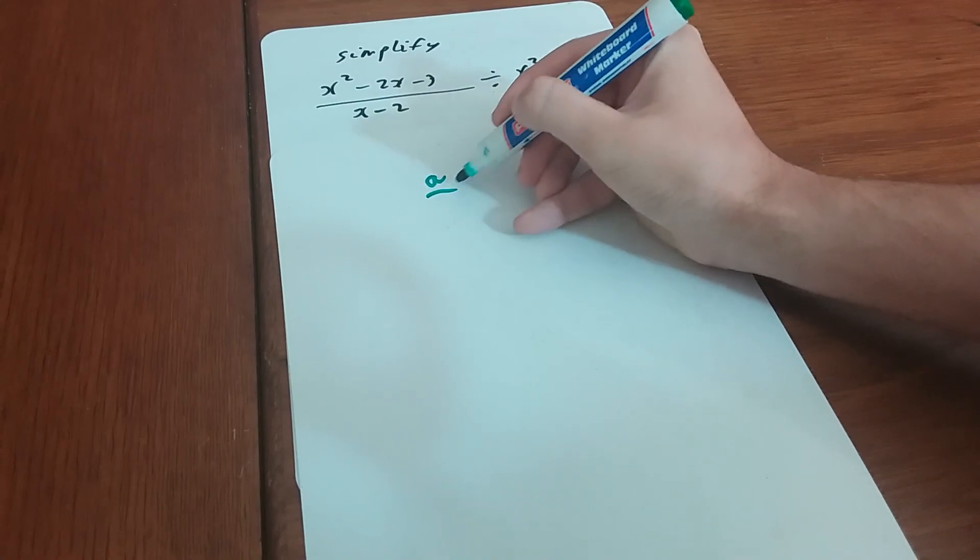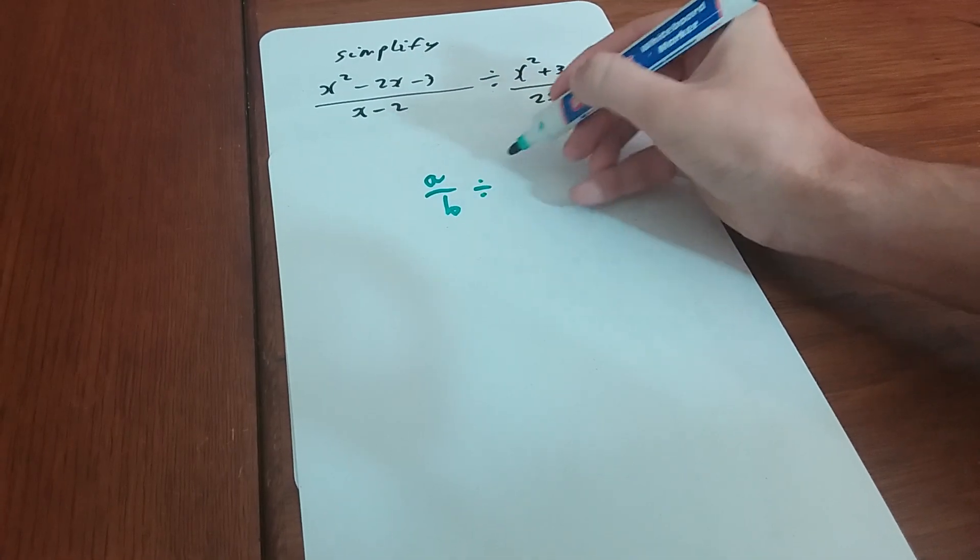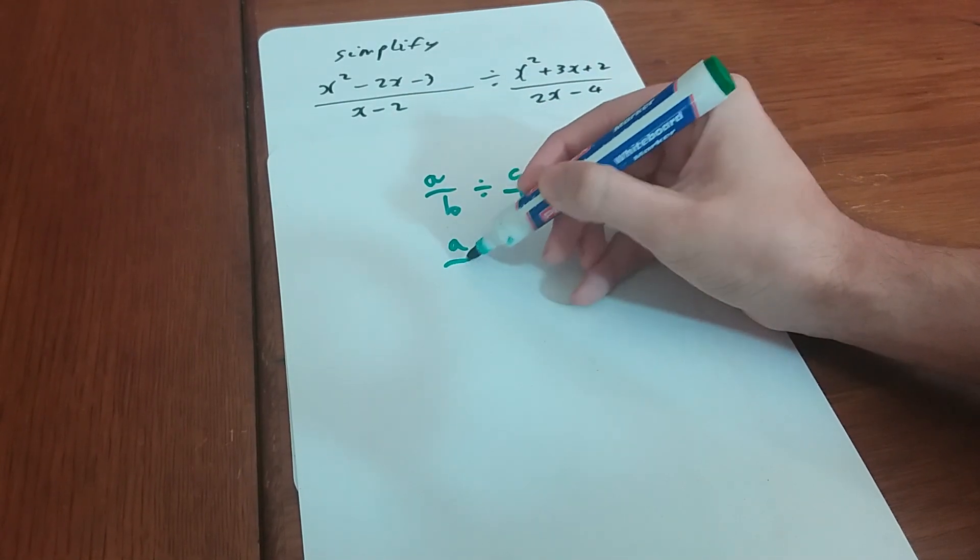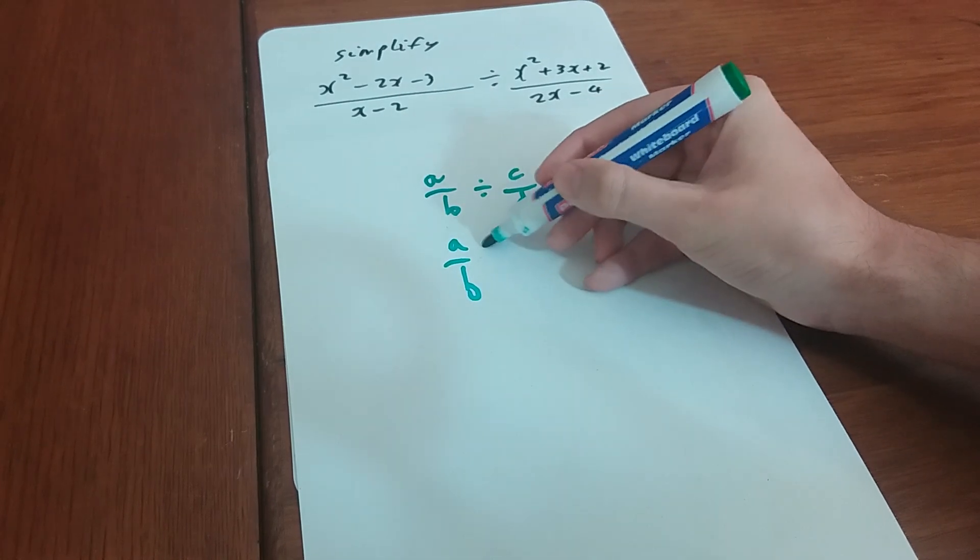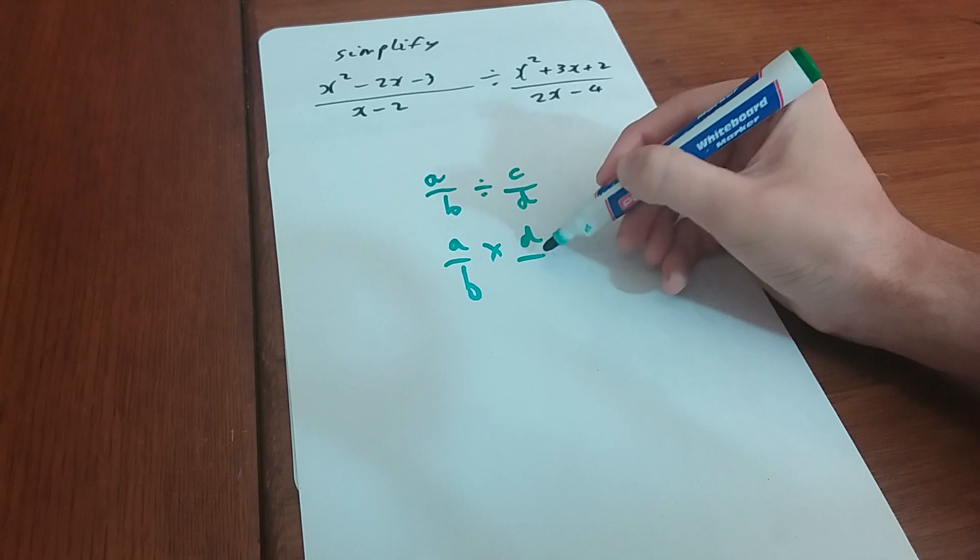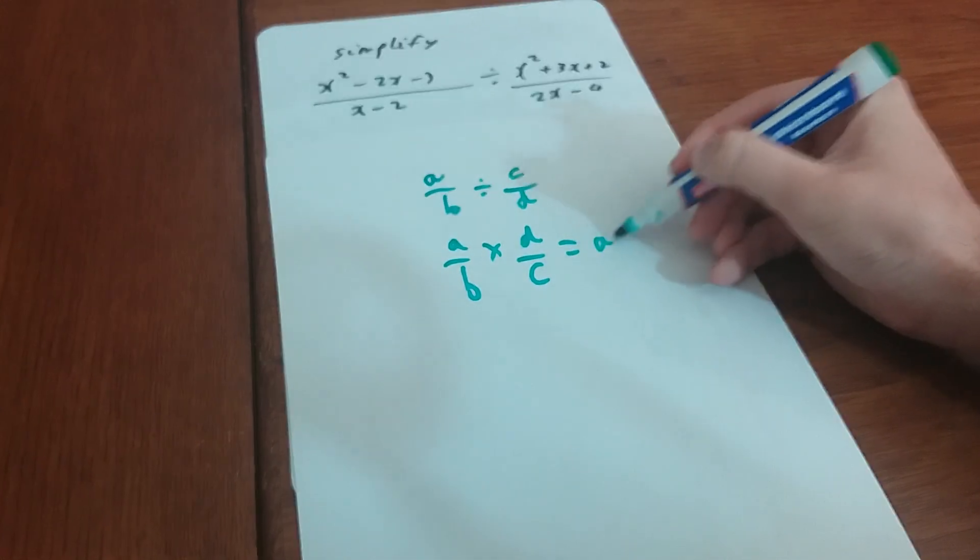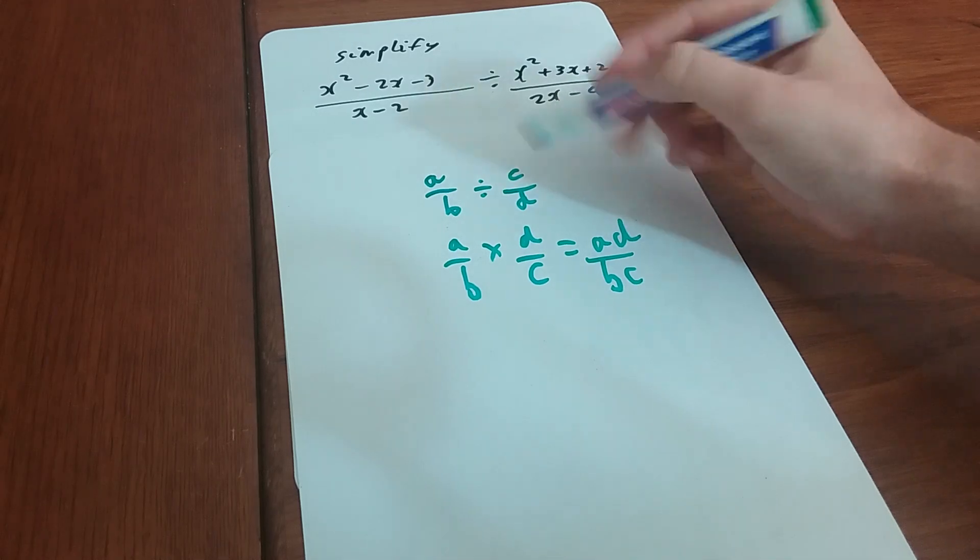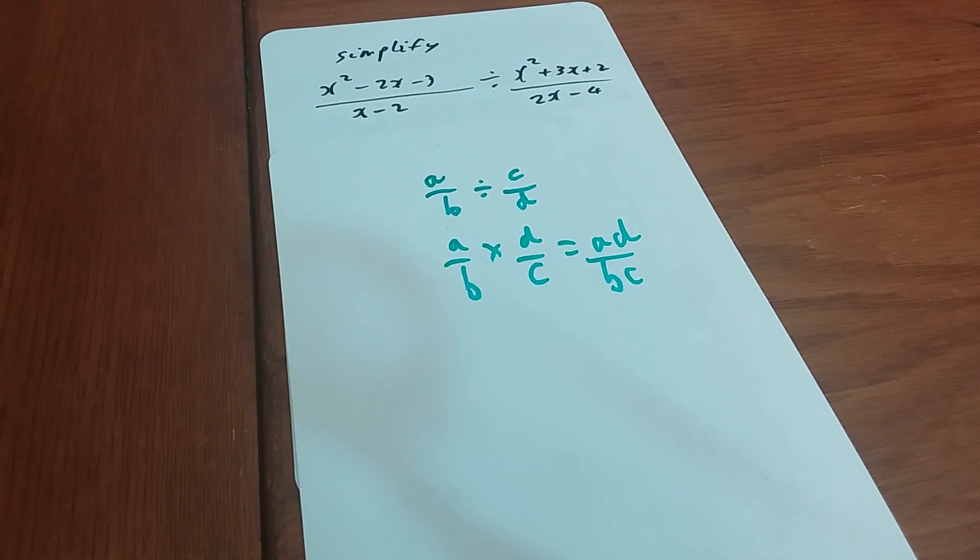If you've got a over b divided by c over d, the rule here is we can keep the first thing the same (a over b), we can change the sign in the middle to a times, and then we can flip the end thing, that's d over c, which is the same as ad over bc. We can use the same rule if we're dealing with algebra. So we're going to keep, change, and flip.